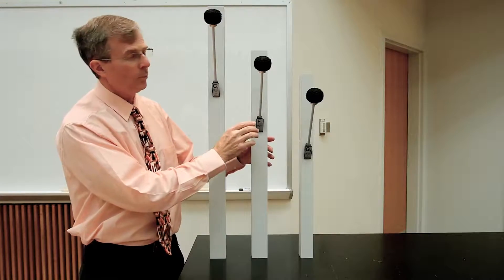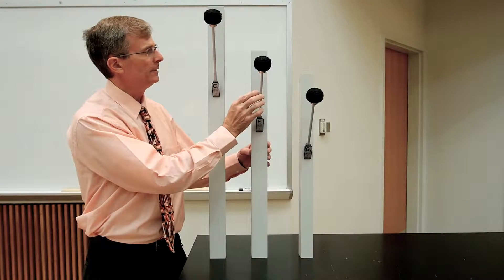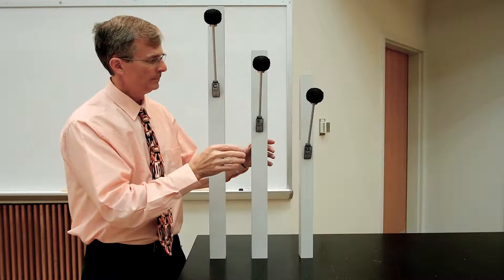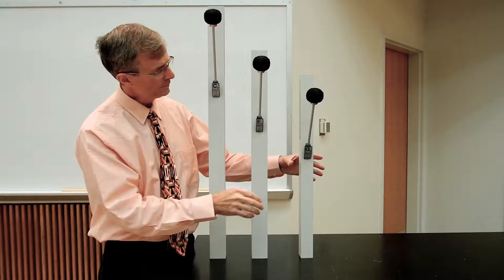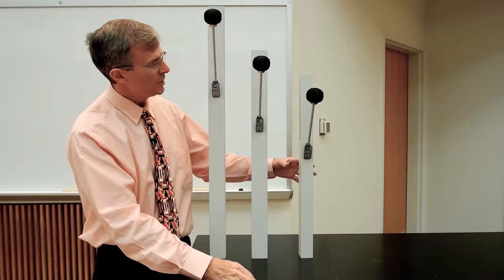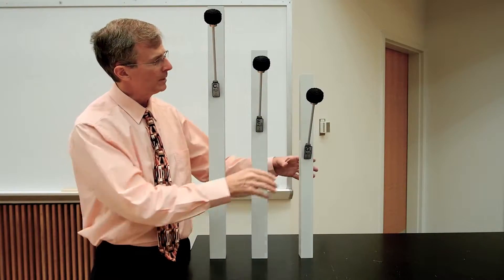This is an E, one ledger line down below the bass clef. And then this is a G. It's the very lowest line on the bass clef.